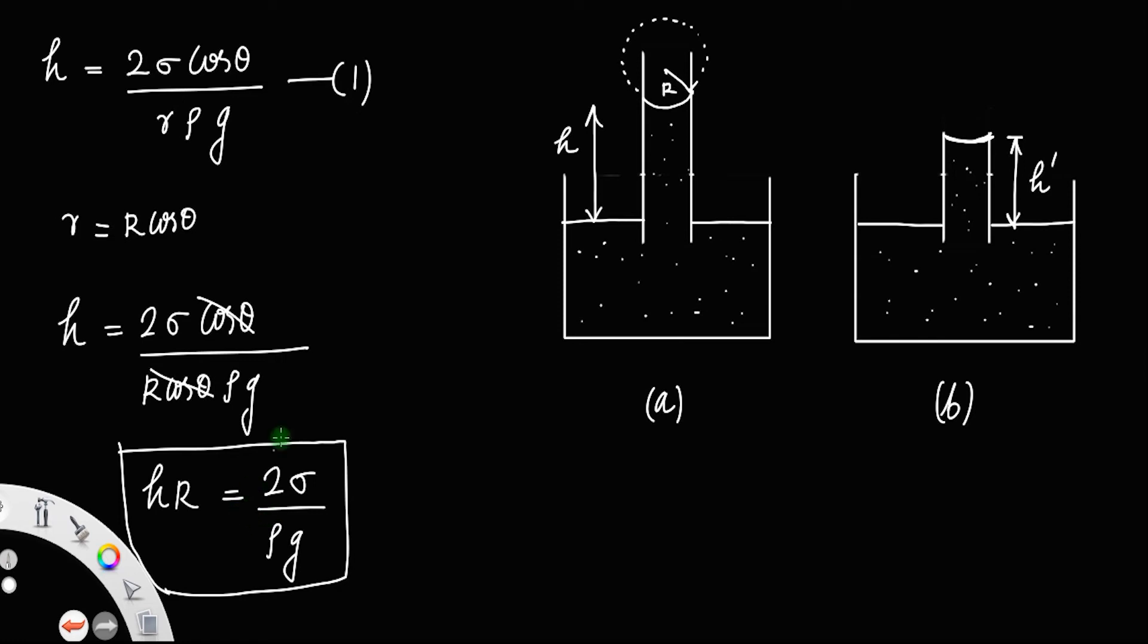From the equation, it is clear that 2 is constant, surface tension is constant as long as the liquid remains the same, density remains constant for the same liquid, and gravity is always constant. This means hr equals a constant.